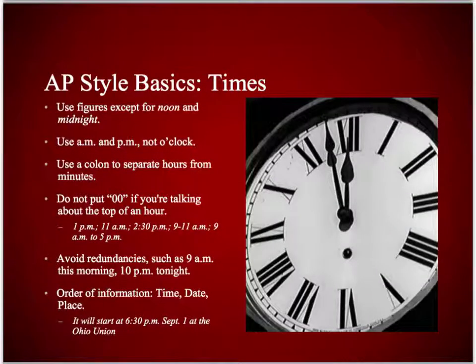Talking about time: we never write 12 o'clock for noon or midnight — we write noon or midnight. We use a.m. and p.m., not o'clock, and we use periods with that. We only use a colon to separate hours and minutes if there are actually minutes; if it's just 8 o'clock, we obliterate those two zeros. Understanding these rules for numbers when it comes to time will be helpful.